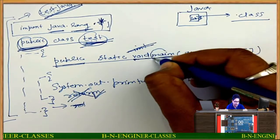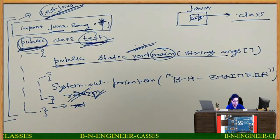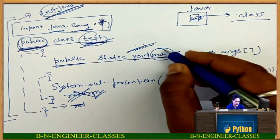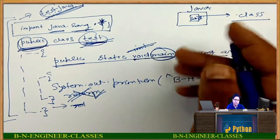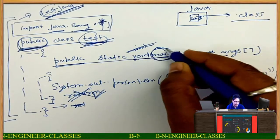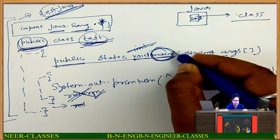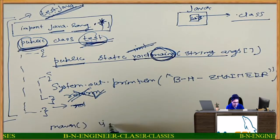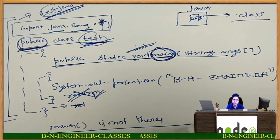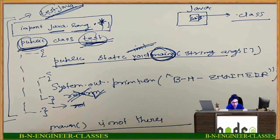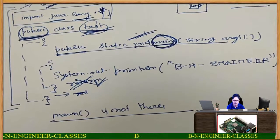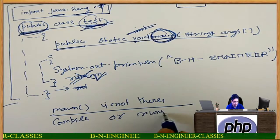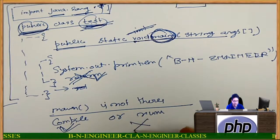What is main? Main tells the interpreter from which place execution will be started. The interpreter will search for main, and from this place the running will be started. Particularly from main, running will be started. If main is not available, your program can be compiled only — it cannot be run.